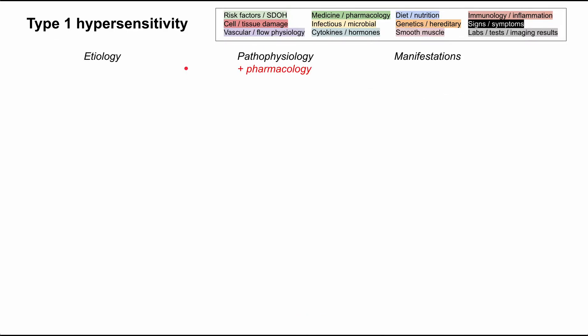Let's start with the etiology. What actually causes somebody to be primed for a type 1 hypersensitivity reaction, and how is it triggered? It usually begins with a prior sensitization — the person has contact with an antigen before they have their actual reaction. This prior sensitization forms an IgE against the antigen itself. This IgE coats the surface of mast cells and basophils, which are now primed to react when the body encounters the antigen again.